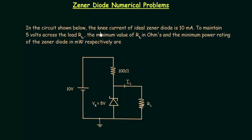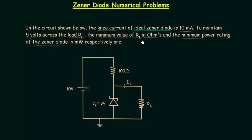In the circuit shown below, the knee current of the ideal zener diode is 10 mA. To maintain 5V across the load resistance RL, we have to calculate the minimum value of RL in ohms and the minimum power rating of the zener diode in mW respectively.